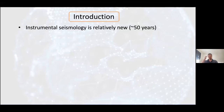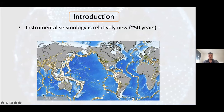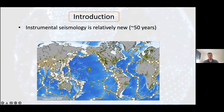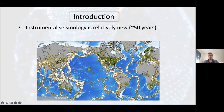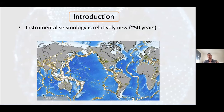Instrumental seismology is relatively new. Most of the data we are using right now have been collected in the past 50 years, mainly because during that time we've made a lot of improvements in terms of instruments and storage capabilities. Here I'm showing a video of the number of seismic stations through time and the number of earthquakes recorded. The inverted triangles are seismic stations, from the 80s to now. As we increase the seismic network, we can detect more and more earthquakes.